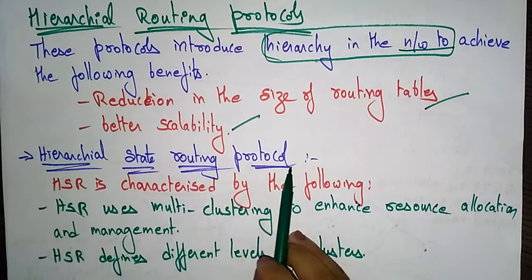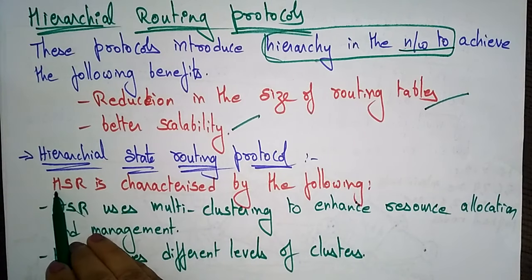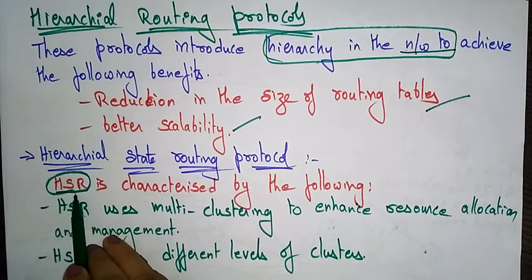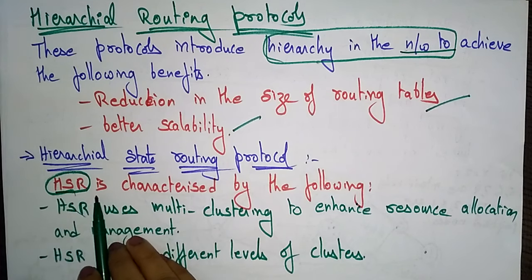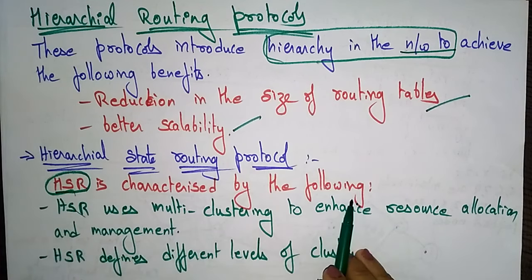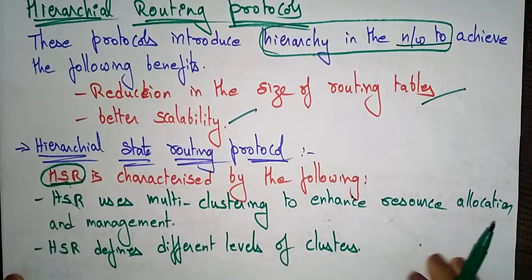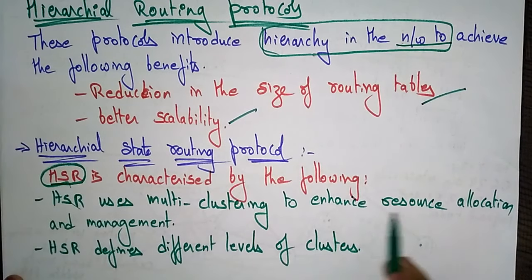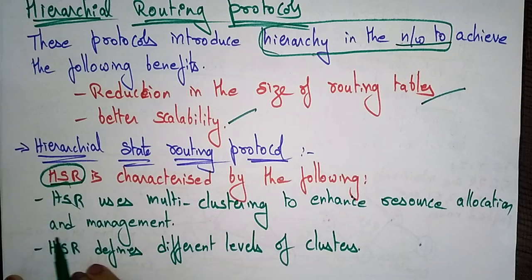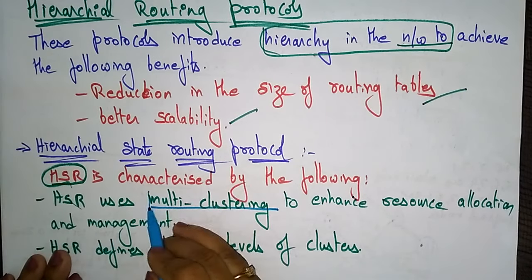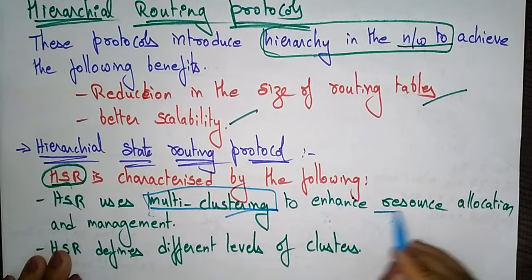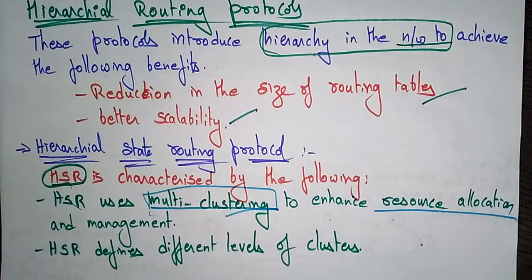Hierarchical State Routing protocol, which is called HSR, is an example for this type of routing protocol. HSR uses multi-clustering to enhance resource allocation and management. The first step involves selecting using multi-clustering, so why it is using multi-clustering — to enhance the resource allocation and management.